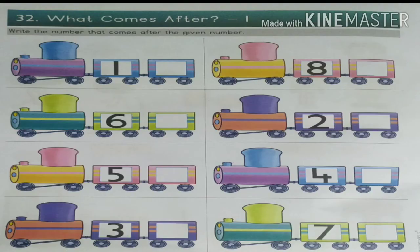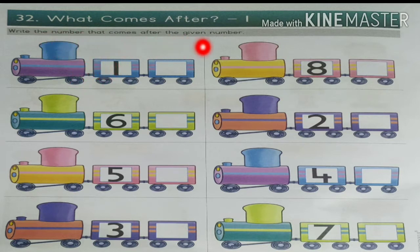Students, in the previous class we have seen number 32 on the patho page number 35, which is finished. Now we are going to write what comes after. After the 8th number is coming. If you see this train, write the number that comes after a given number.